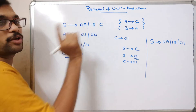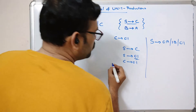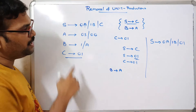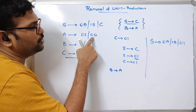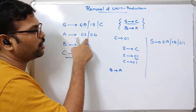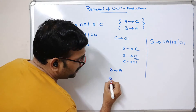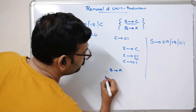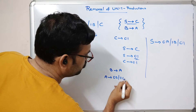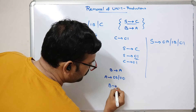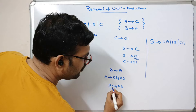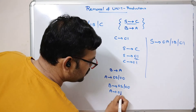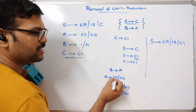Similarly for B→A: A has productions A→0S and A→00 and there is no terminal unit production for A. So we substitute: B→0S and B→00, and A→0S and A→00. We are assigning the same productions of A to B, replacing the unit production B→A.